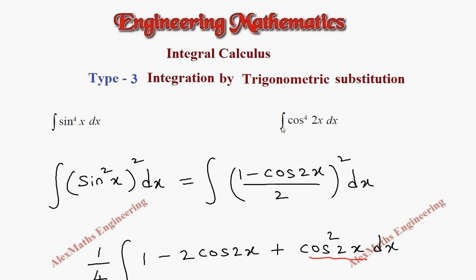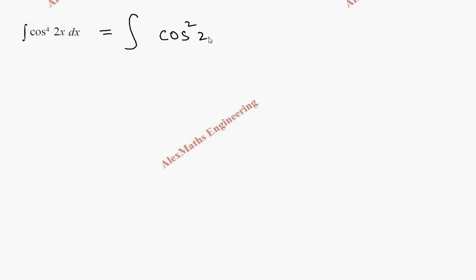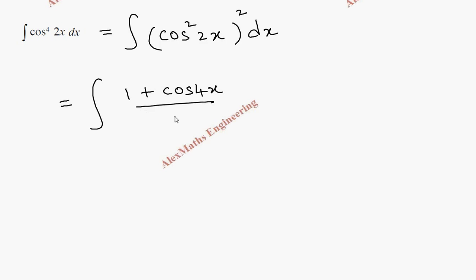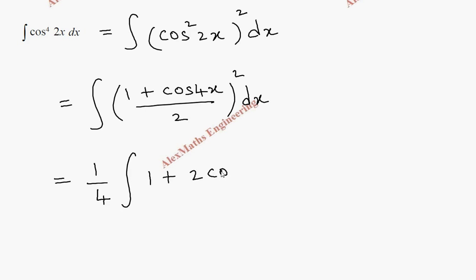Coming to the next question, we have the integral of cos⁴(2x) dx. This can be written as (cos²2x)² dx. The formula for cos²2x is (1 + cos4x) / 2. Squaring and expanding using (a + b)², the denominator becomes 4, taken outside: (1/4) integral of (1 + 2cos4x + cos²4x) dx.